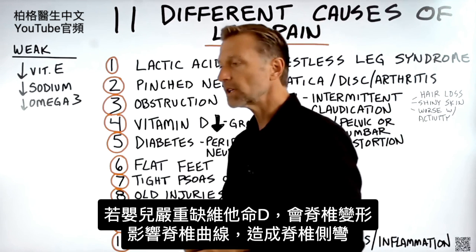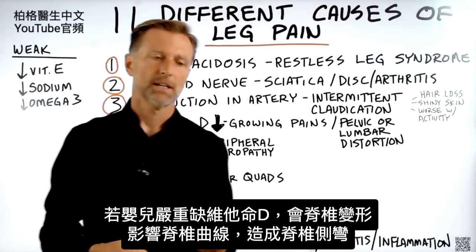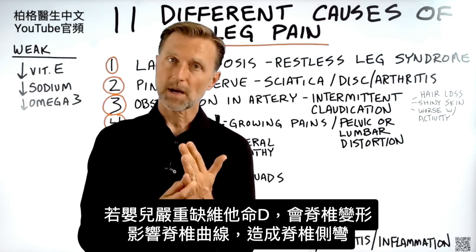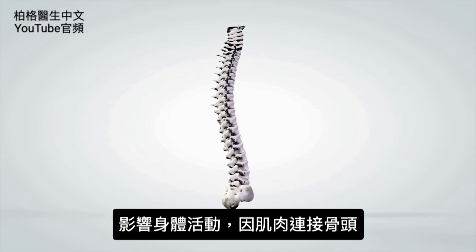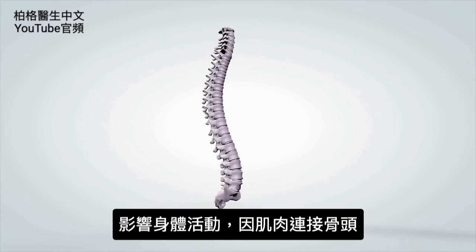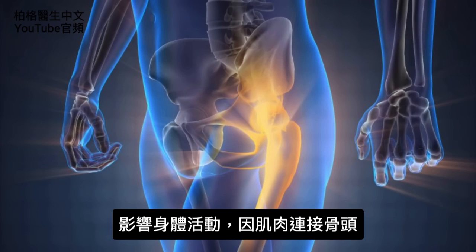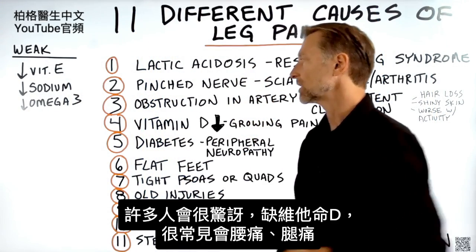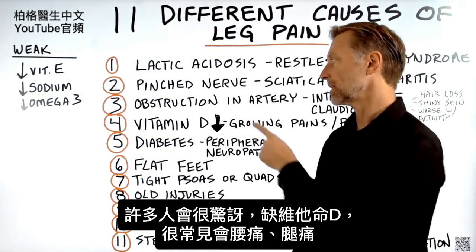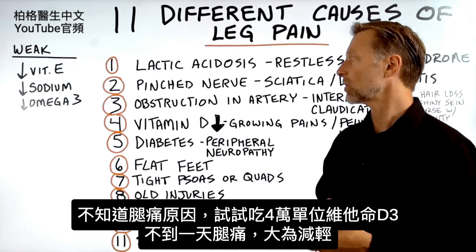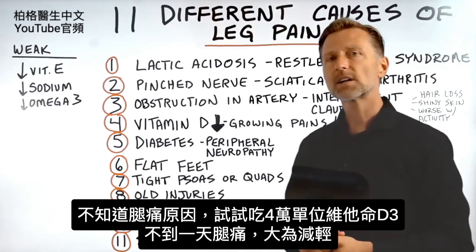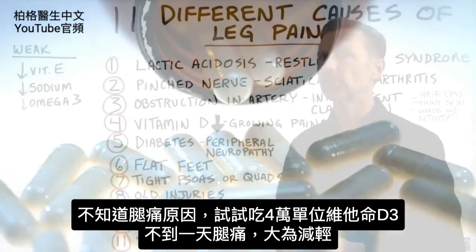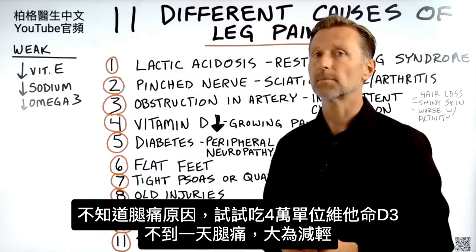If you're really deficient as an infant, it can cause distortion of the spine, affecting its curve and contributing to scoliosis, which creates problems with movement because the muscles are connected to the bones. Most people would be surprised how common this is with leg pain, not just low back pain. If you're confused about your leg pain, just start taking about 40,000 IUs of vitamin D, and within a day you'll likely find it eases up tremendously.